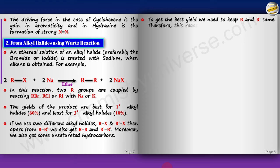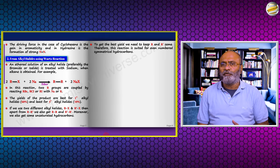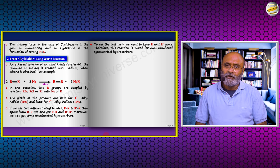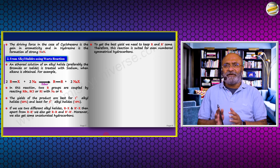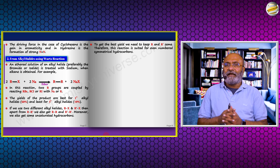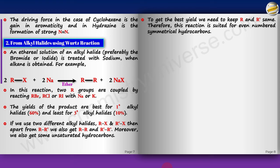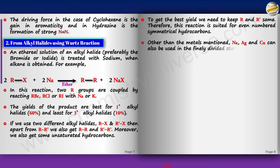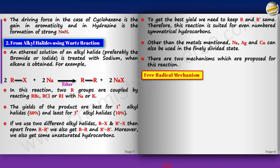To get the best yield, R and R' must be the same. Therefore, the Wurtz reaction is best suited for even-numbered, symmetrical hydrocarbons. When asked which alkane can best be prepared by Wurtz reaction, check that the carbon count is even and the molecule is symmetrical. Primary alkyl halides give the best yield. Silver and copper (finely divided) can also be used in place of sodium. The reactivity order of alkyl halides is RI > RBr > RCl.